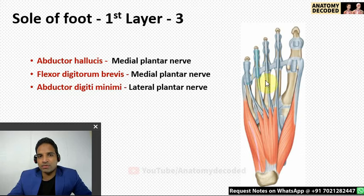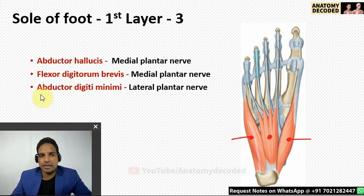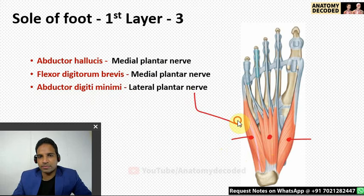In the sole of the foot there are four layers of muscles. In the first layer there are three muscles: abductor hallucis, flexor digitorum brevis, and abductor digiti minimi. Abductor digiti minimi is on the lateral aspect and is supplied by the lateral plantar nerve. The other two muscles are more medially placed and are supplied by the medial plantar nerve. These plantar nerves are branches of the tibial nerve, dividing approximately at the level of the tarsal tunnel.